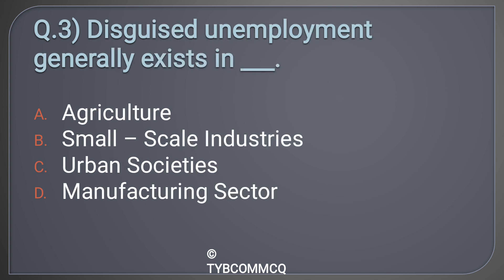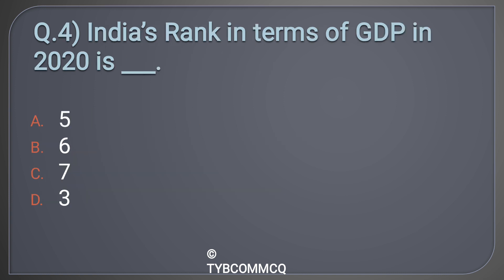Question number three: Disguised unemployment generally exists in ___. Option A: Agriculture, Option B: Small scale industries, Option C: Urban societies, Option D: Manufacturing sector. The correct answer is Option A: Agriculture.